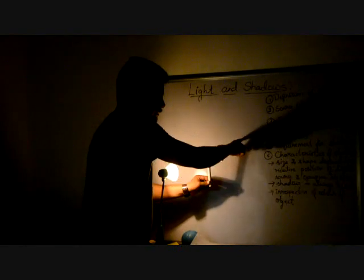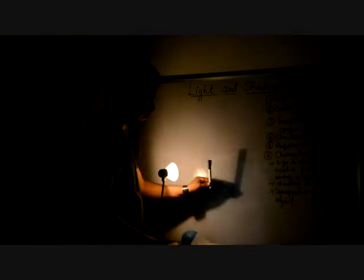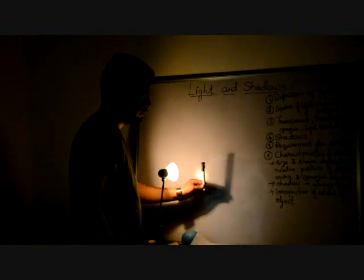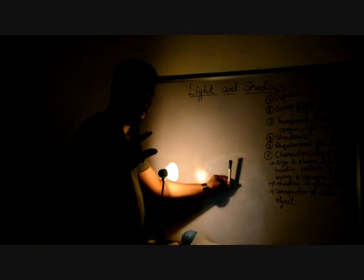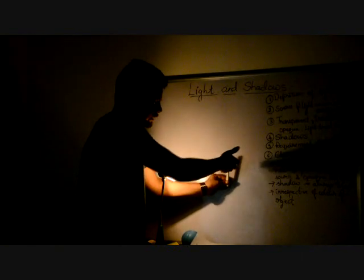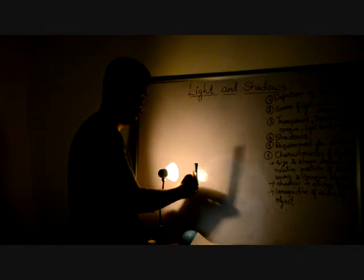There are two characteristics of shadows. The first is that the shape and size of the shadow depends upon the relative position of the source of light and the opaque object. If I take the object toward the light, the shadow becomes bigger, and if I take it away, the shadow becomes smaller. Either I can move the opaque object or I can move the light source — in both cases, the size and shape of the shadow changes.